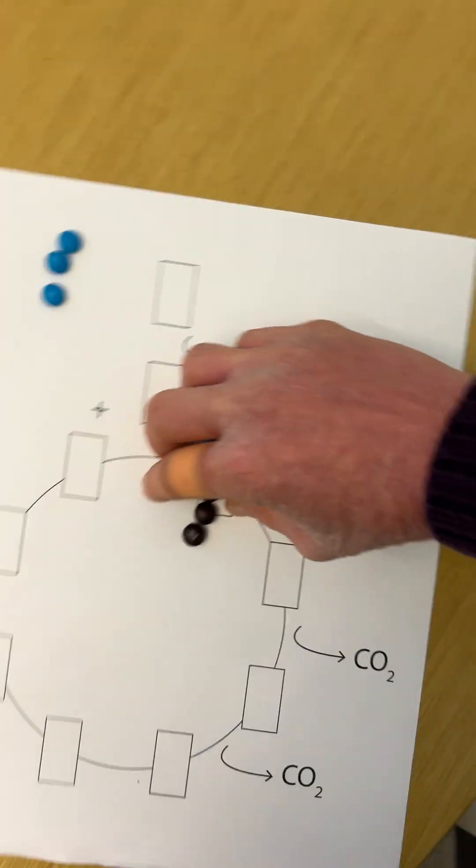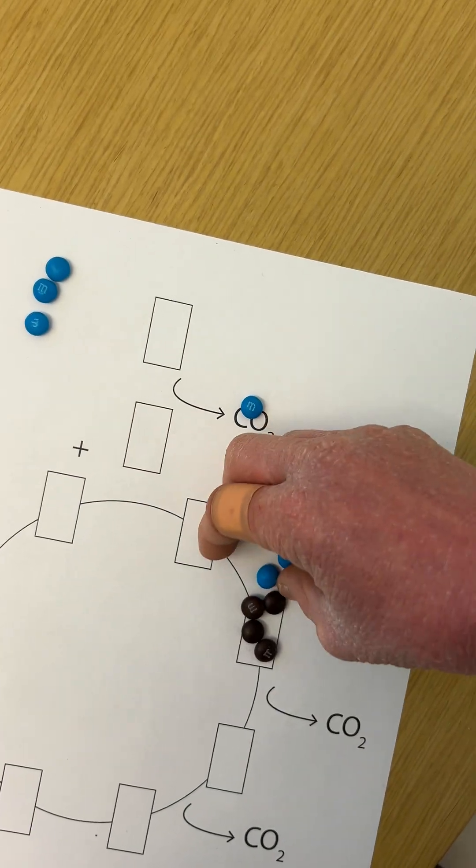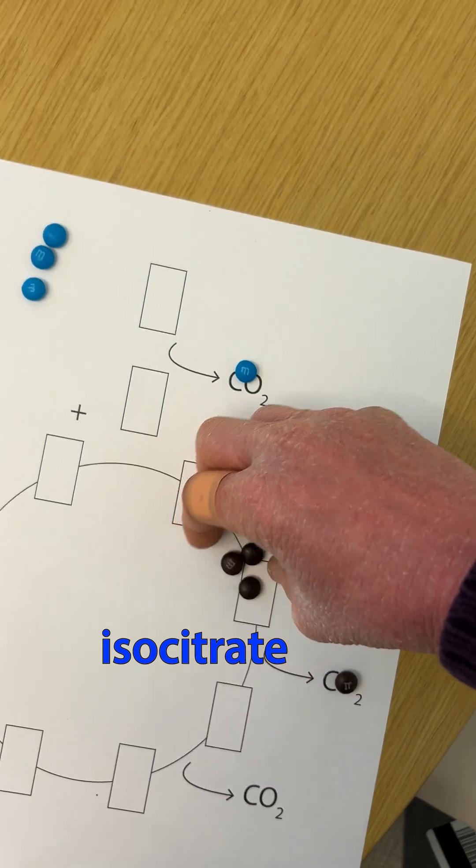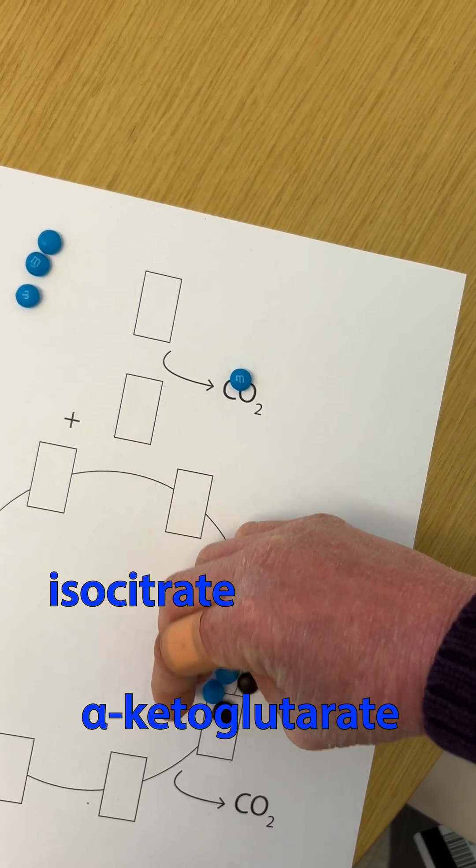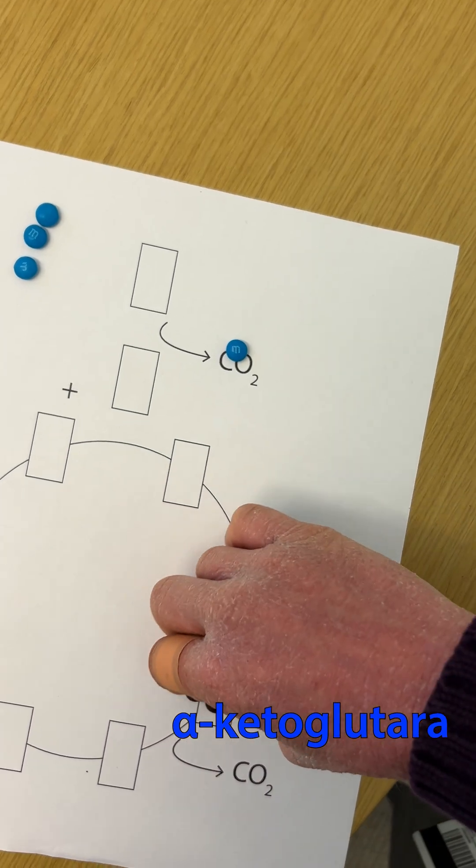We are not going to lose the carbons from the glucose or from the acetyl-CoA in this first time around. We're going to lose two carbons, but we're going to lose carbons that were there already. We're losing the carbons that were part of the oxaloacetate and not the carbons that were part of the glucose.